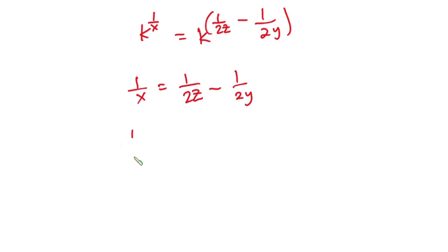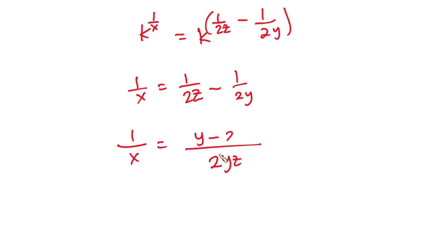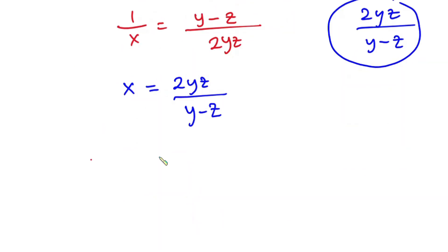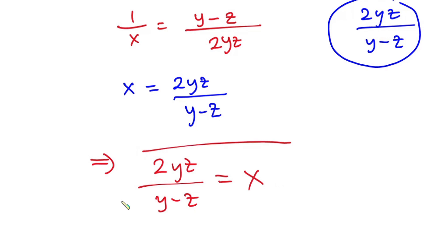Now let's simplify. We have 1 over x is equal to, combining the two fractions with LCM of 2yz, giving y minus z over 2yz. From the problem, we have to find 2yz over y minus z. So in order to get that fraction, we reciprocate this equation. So we have x is equal to 2yz over y minus z, and this is our final answer.